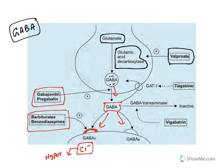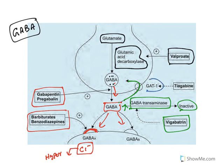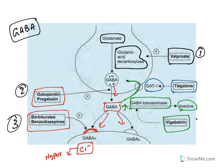Once released, GABA can be metabolized by GABA-transaminase. Once metabolized, it becomes inactive. This metabolism is inhibited by vigabatrin — so by inhibiting the metabolism, GABA levels can be enhanced. The excess GABA is taken back into the neuron by the GABA transporter, which is inhibited by tiagabine. All these drugs — valproate, gabapentin, pregabalin, benzodiazepines, barbiturates, vigabatrin, and tiagabine — enhance GABA neurotransmission and are widely used to treat epilepsy.